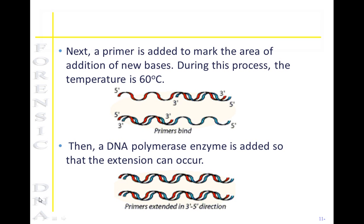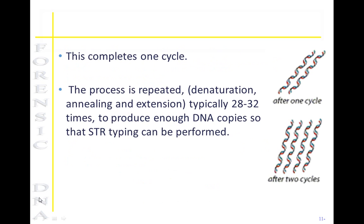Then a DNA polymerase enzyme is added so that the extension can actually occur. This completes one cycle. The process is repeated typically 28 to 32 times to produce enough DNA copies so that STR typing can be performed. Usually this yields approximately one billion copies and it takes less than three hours.